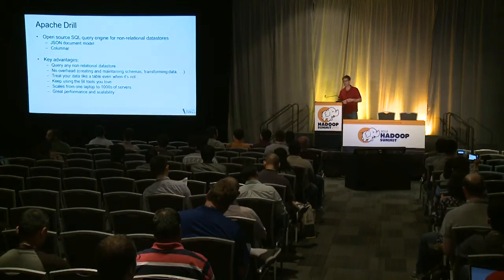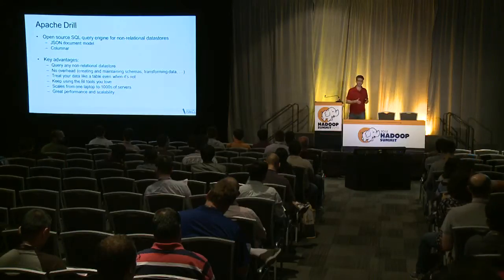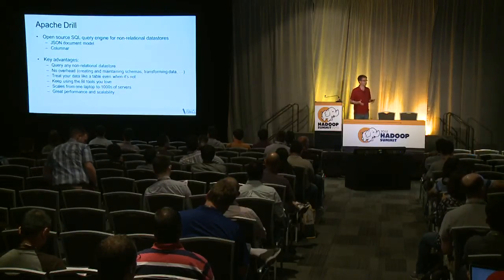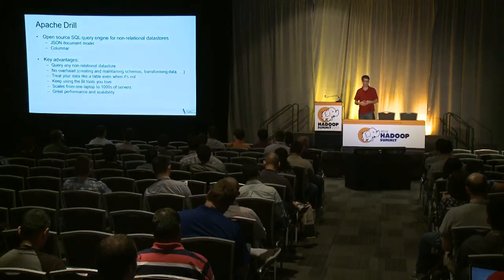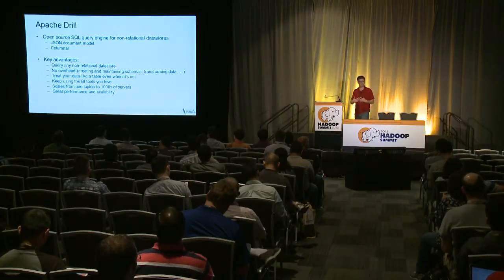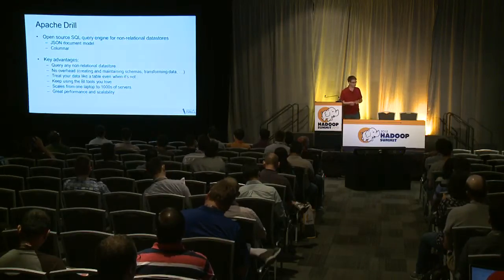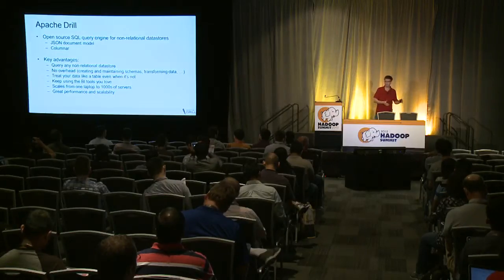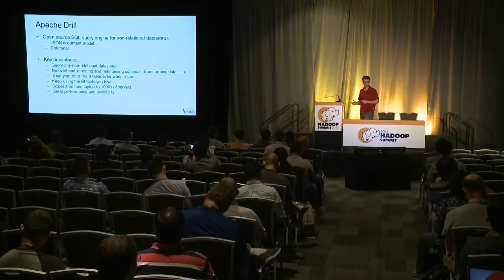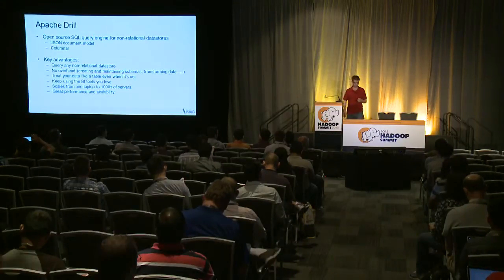The key advantages: you can query all your non-relational data stores and do analytical things you'd normally want to do. One of the vision's foundation principles is low to no overhead — avoid maintaining schema, avoid transforming data. ETL should be a thing of the past. We want to be able to treat data like a table even if it isn't a table in the traditional sense. You can use the BI tools you already have, start on a laptop, and scale up to thousands of nodes. It's all about great performance, scalability, and quick iteration.